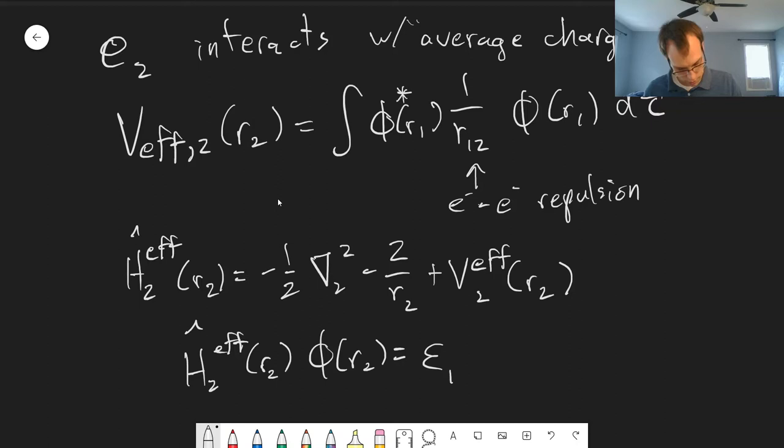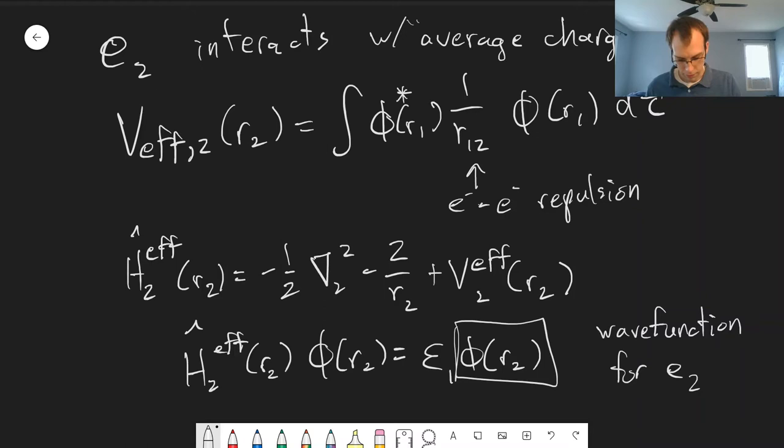Now the problem here is, we solve this and that gives us the wave function and energy for electron two. But to get this wave function, we needed to know what the initial wave function is for electron one. And the wave function should be the same for electron one and electron two. There's nothing different about them in this particular system. They're both going to be in 1s orbitals. So there's a circular dependence here. To find the wave function, we need the effective potential. But to find the effective potential, we need the wave function.